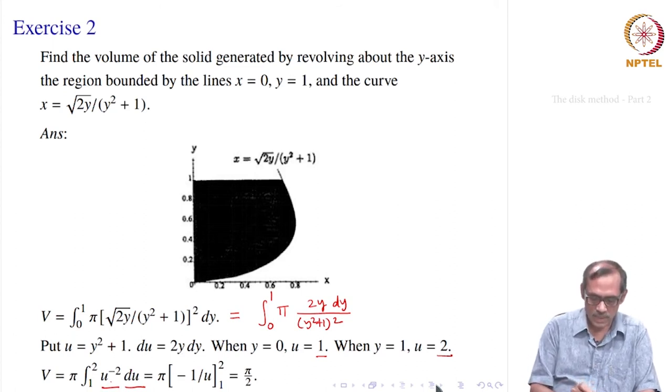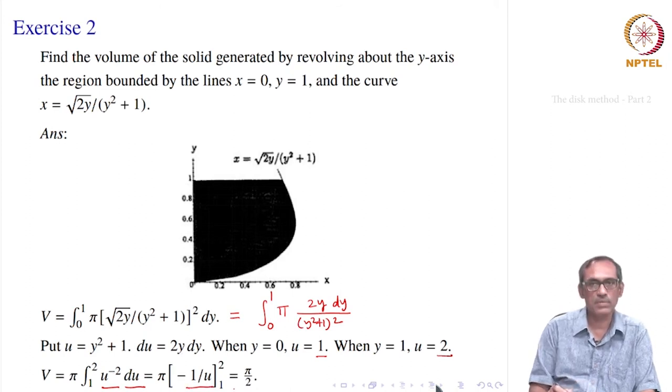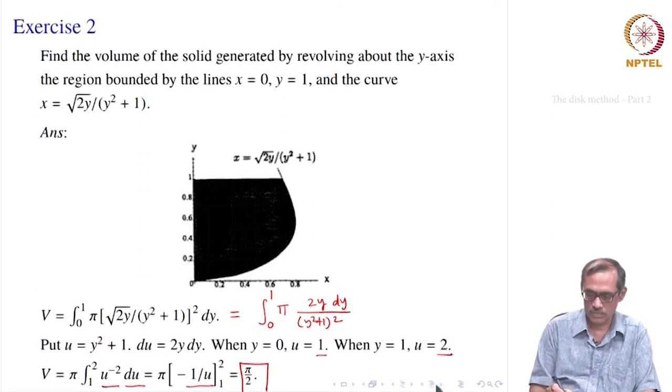This can be integrated: u to the power −2 gives −1/u, evaluated at limits 1 and 2 and subtracted. That simplifies to π divided by 2.